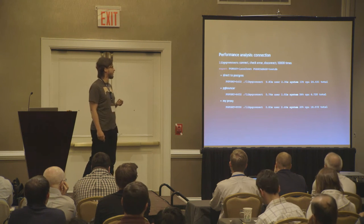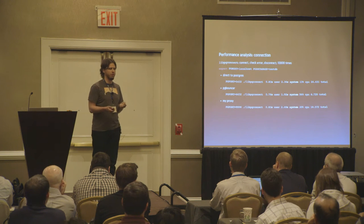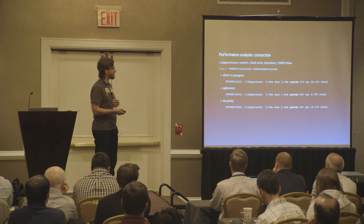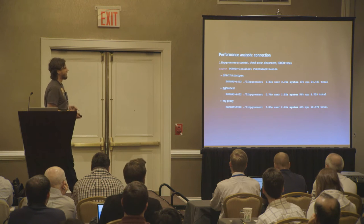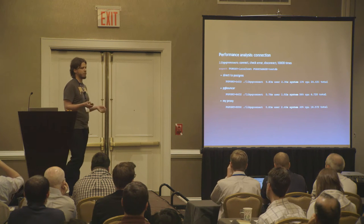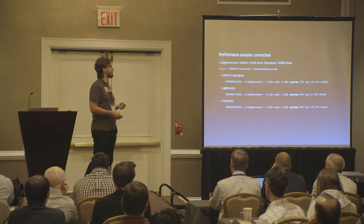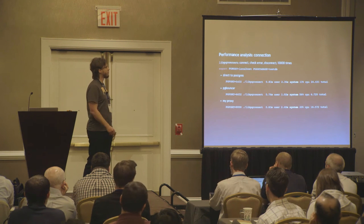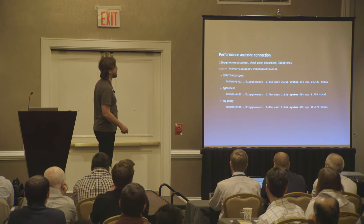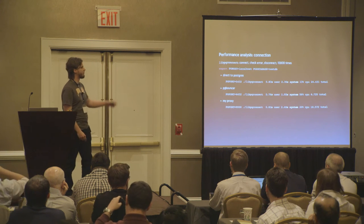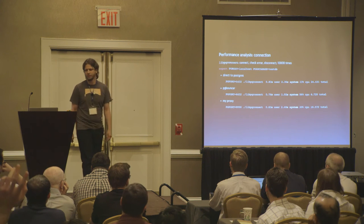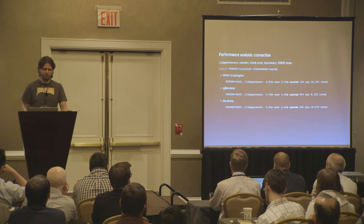A couple months ago I wrote my own clone of PgBouncer in Python, just as an experiment — highly recommended if you want to practice programming. Written in Python, totally unoptimized, it just accepts connections, puts them in a list, does some locking, and forwards packets through. Connecting to that 10,000 times: 10 seconds, compared to 24 seconds directly to Postgres. Even a totally dumb proxy implementation beats connecting directly to Postgres — that shows how slow connecting to Postgres really is.